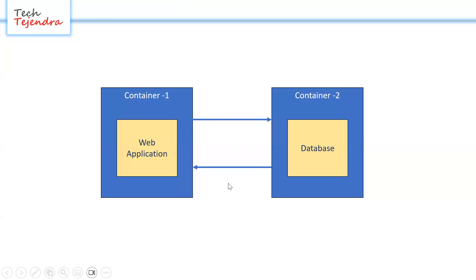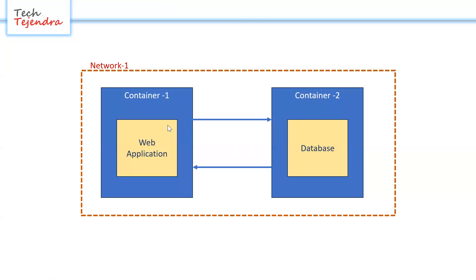To resolve this problem, we can create a network and run both containers inside that network. Once both containers are bound to the same network, instead of using an IP address we can access the container by its container name — no need to use IP addresses anymore.